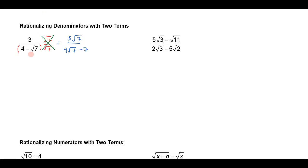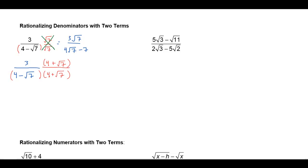So what I need to do, instead of multiplying by the square root of 7 over the square root of 7, you might remember that we have a special product. If I multiply by what we call the conjugate of 4 minus the square root of 7 — in this case 4 plus the square root of 7 — then I get that special product that's the difference of squares. So in doing this, in the numerator I would get 3 times 4 plus the square root of 7, and in the denominator I would get 16 minus 7.